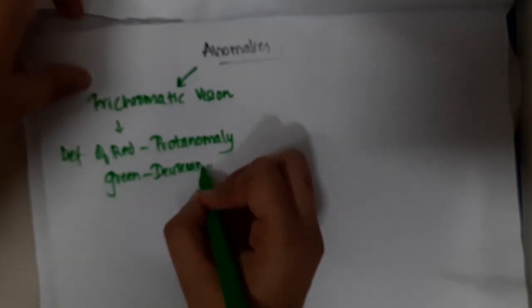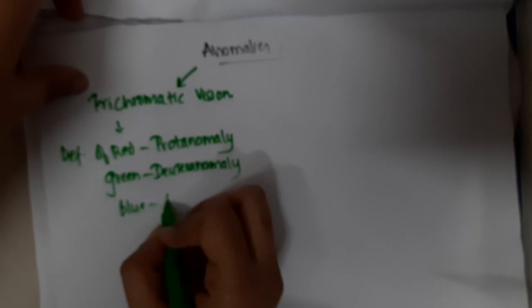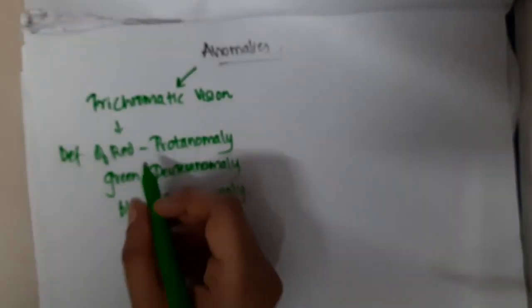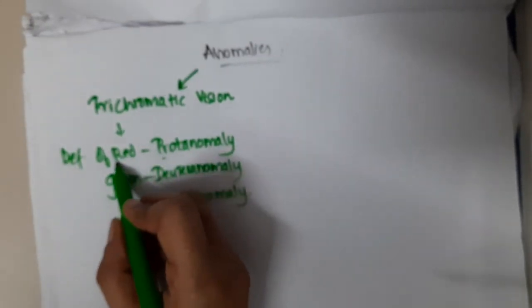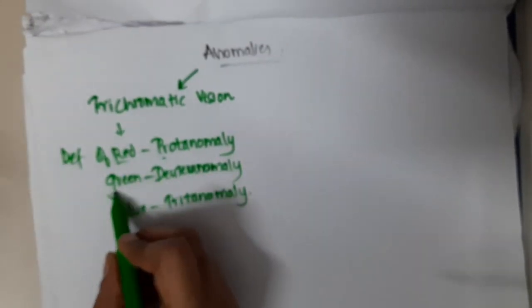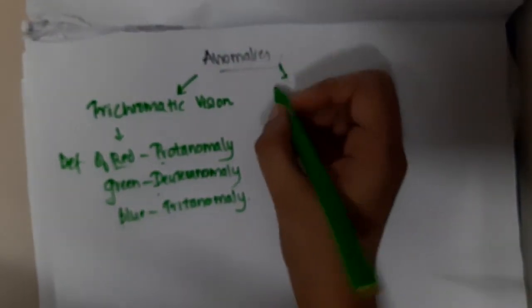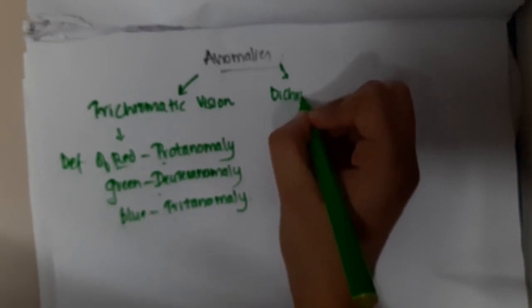Then if there is deficiency of blue we call it tritanomaly. So: proto for red, deutero for green, triter for blue — tritanomaly. That covers trichromatic vision anomalies.